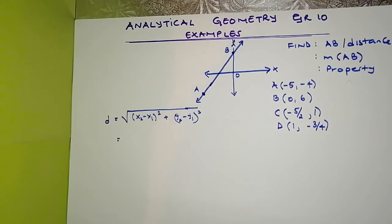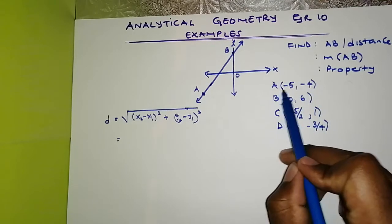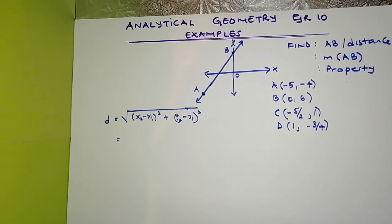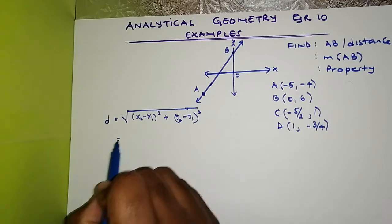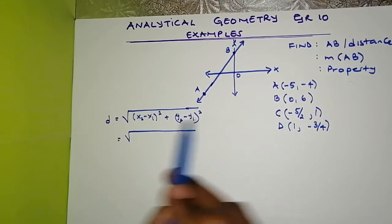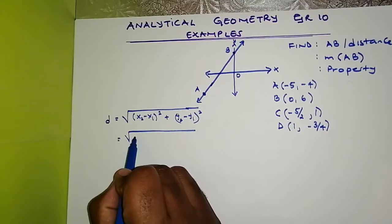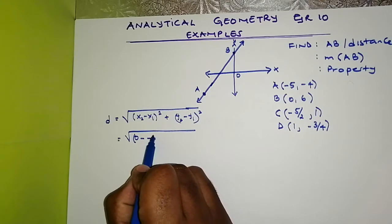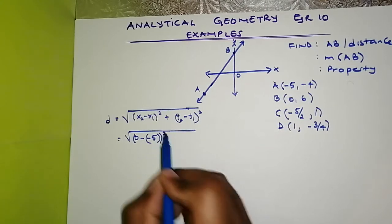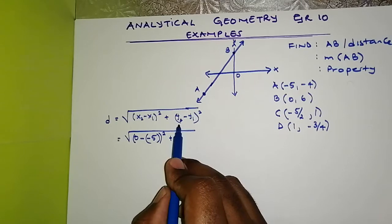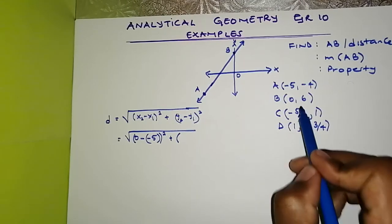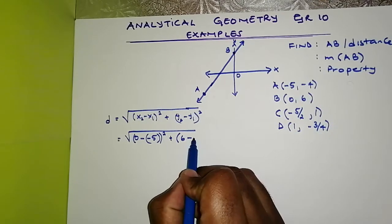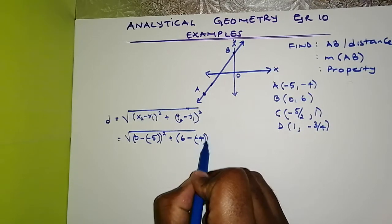I'm going to take A as my X1 and Y1, and B as my X2 and Y2. X2 is 0 minus X1 which is negative 5, so 0 minus negative 5 all squared, plus Y2 is 6 minus Y1 which is negative 4, all squared.